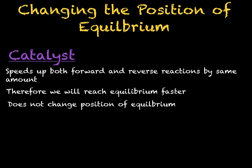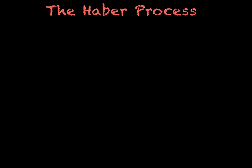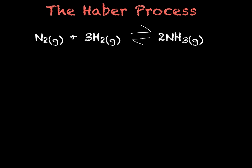We will now look at the Haber process, which is an important industrial process that uses this idea of reversible reactions. The Haber process is used to make ammonia, NH3, which can be used to make fertilisers. Nitrogen and hydrogen are required to make the ammonia, giving us the equation: N2 (g) plus 3H2 (g) reversibly produces 2NH3 (g). The nitrogen is extracted from the air and the hydrogen is obtained from natural gas. Because the reaction is reversible, not all of the nitrogen and hydrogen will convert to ammonia, so the reaction will reach a dynamic equilibrium.